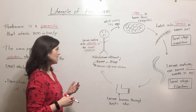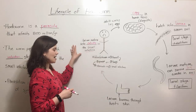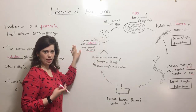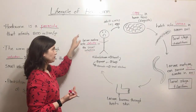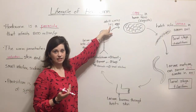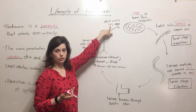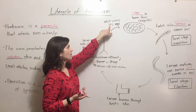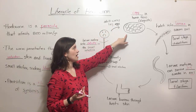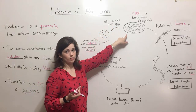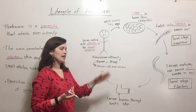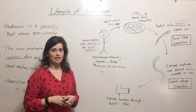These adult worms are the ones that then attach to the lining of the small intestine and suck blood. They can stay there for years, and during the time that they are alive within the body, they're constantly laying eggs — huge numbers of eggs — that then get excreted from the human body in the feces. And then the cycle can continue.